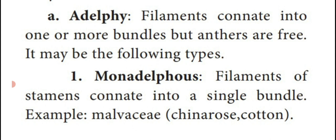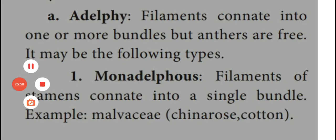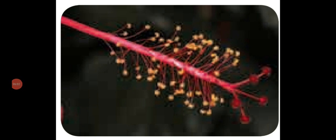First type: monadelphous — mono means one or single. The filaments of the stamens are joined together among themselves to form one bundle or a single bundle — that is known as monadelphous. Example: Malvaceae family, Hibiscus rosasinensis — that is China rose. Another example is cotton plant. In both plants the filaments of the stamen fuse together to form a single bundle — see the diagram — this is the androecium of the hibiscus flower, many stamens with yellow anther lobes at the tip, all filaments joined together forming a red color tube — one bundle. This is said to be monadelphous.